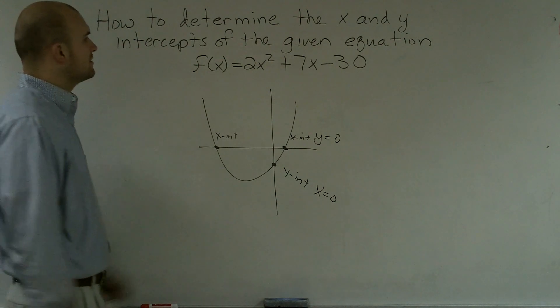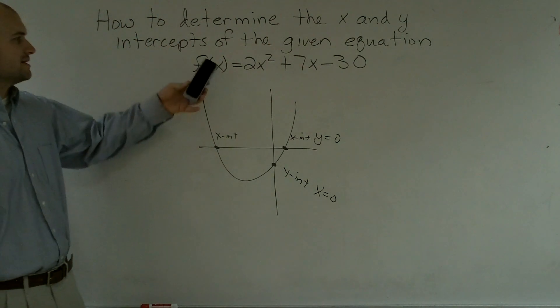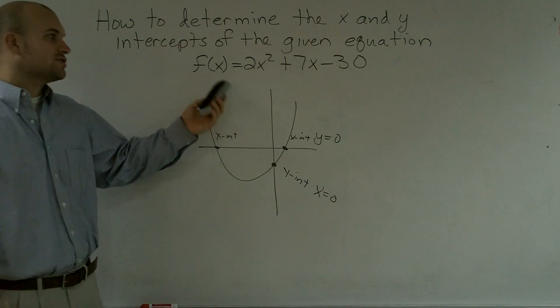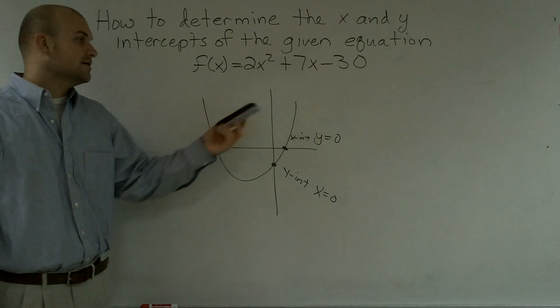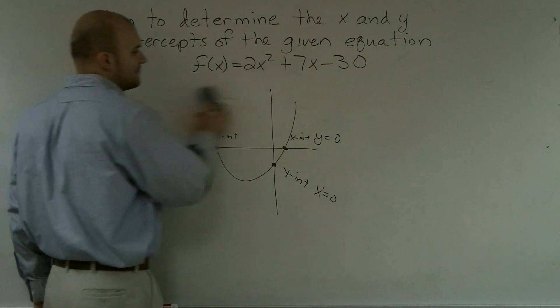So if I say determine what the y and x intercepts are, I'm going to take this function and instead of using f(x), I'm going to think of it in terms of y equals 2x squared plus 7x minus 30. And I'm just going to compute 0 in for x and y.